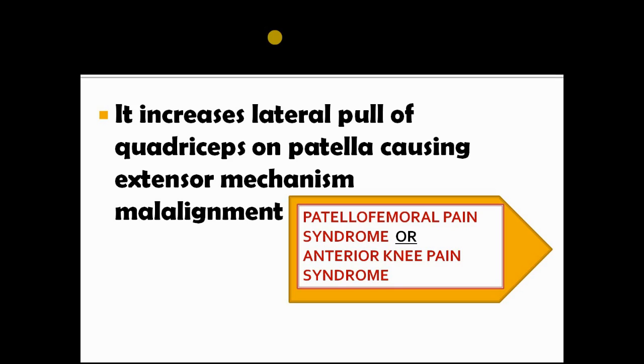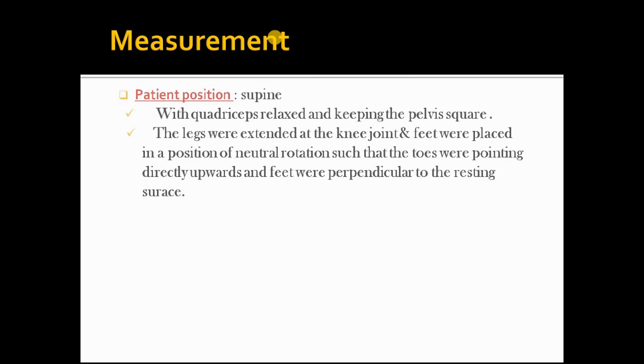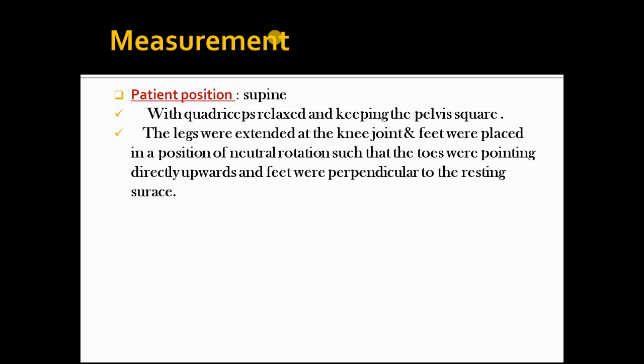Now, how do we measure Q-angle? The measurement follows this procedure: The patient position is supine with the quadriceps relaxed and keeping the pelvis square. The legs were extended at the knee joint and the feet were placed in a position of neutral rotation such that the toes were pointing directly upwards and were perpendicular to the resting surface.